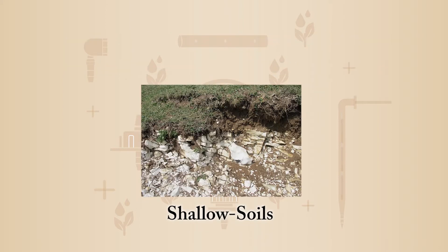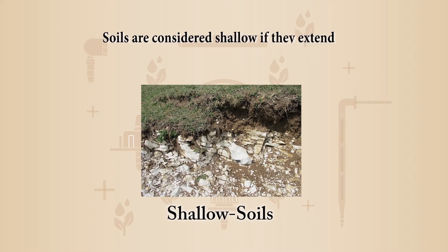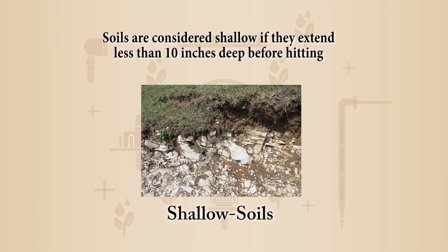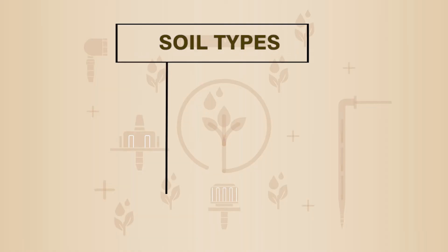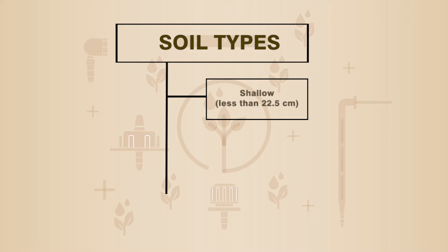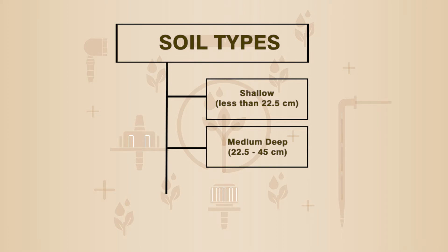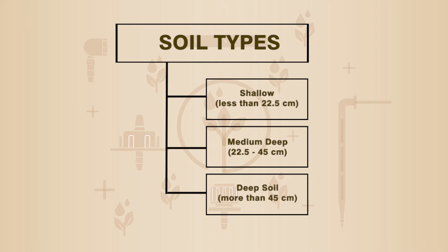Shallow soils are considered shallow if they extend less than 10 inches deep before hitting an impervious layer that retards root growth. According to depth, soil types can be classified as shallow (less than 22.5 cm), medium deep (22.5 to 45 cm), and deep (more than 45 cm).